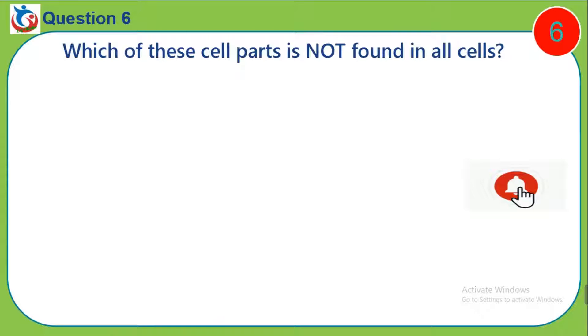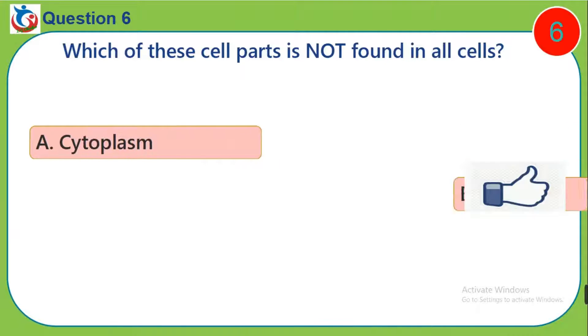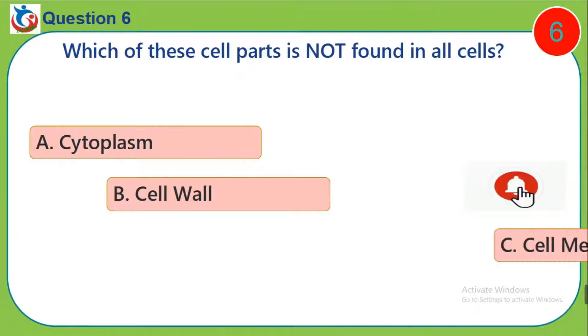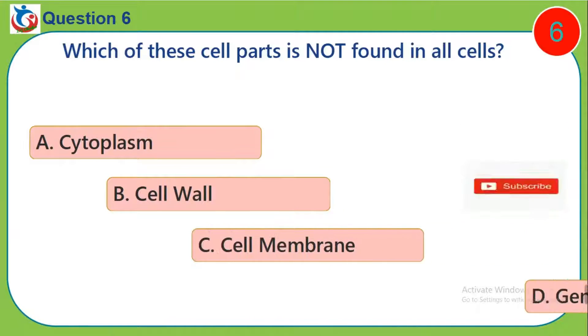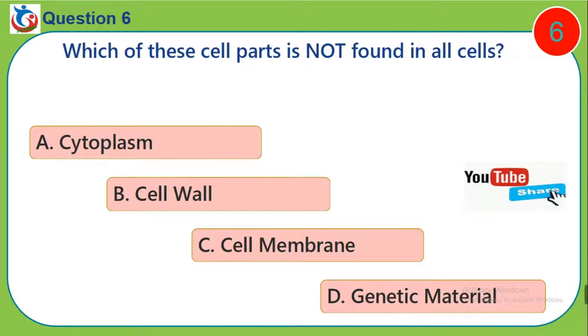Question 6. Which of these cell parts is not found in all cells? A. Cytoplasm. B. Cell wall. C. Cell membrane. D. Genetic material.